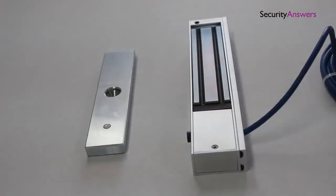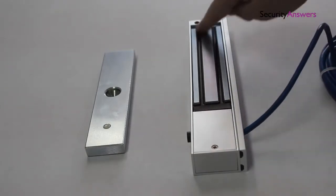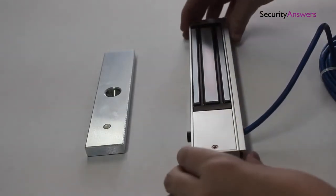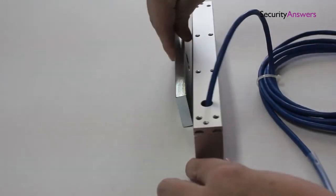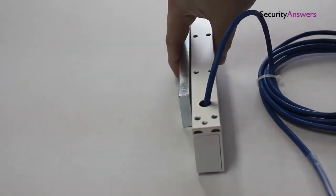In order for an EM lock to function it's extremely important that a thorough connection is made between the two magnets, so take extra care when marking off the area for the second device to guarantee correct alignment.